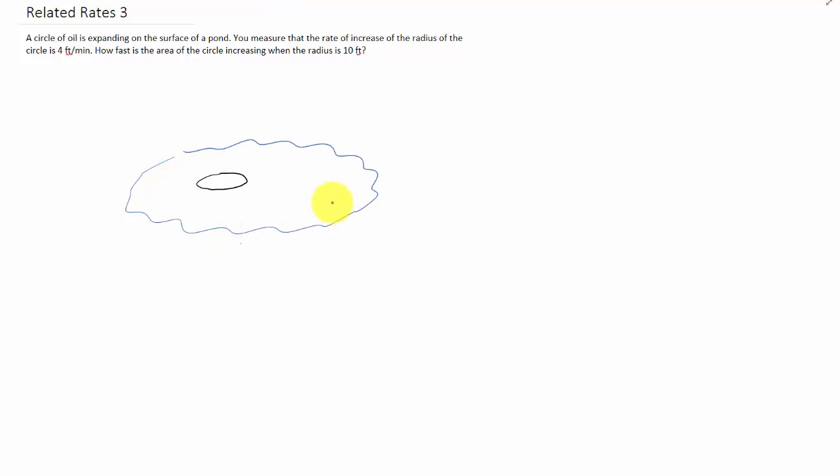So here's our pond, and we're using a little perspective here, so this circle doesn't quite look like a circle from our perspective. But the circle has some radius r, and we always need to ask the question: what rate are we given?